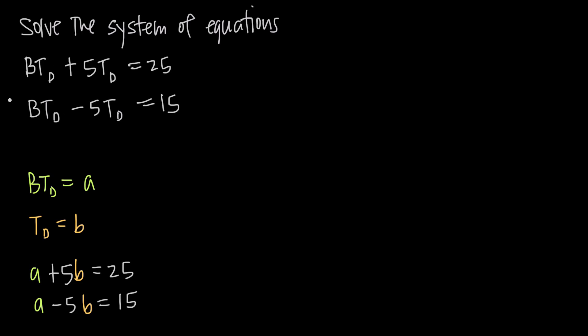The way we can do this is add these two equations together. The reason we want to add is because we can see right away that we have a 5T sub D and a negative 5T sub D. So if we add them, the T sub D will go away. Those will cancel and we'll just be left with BT sub D and we'll be able to solve for that.